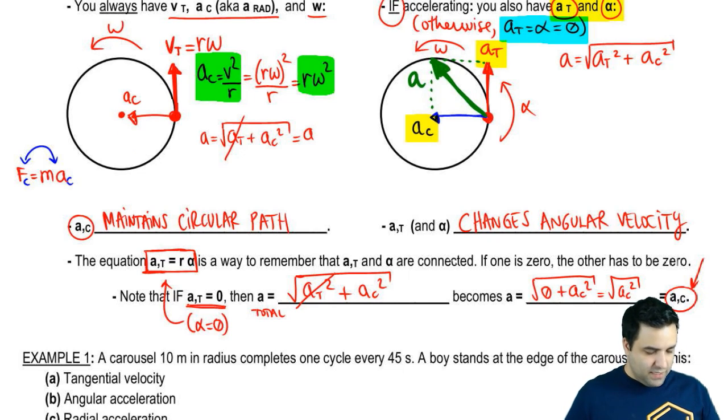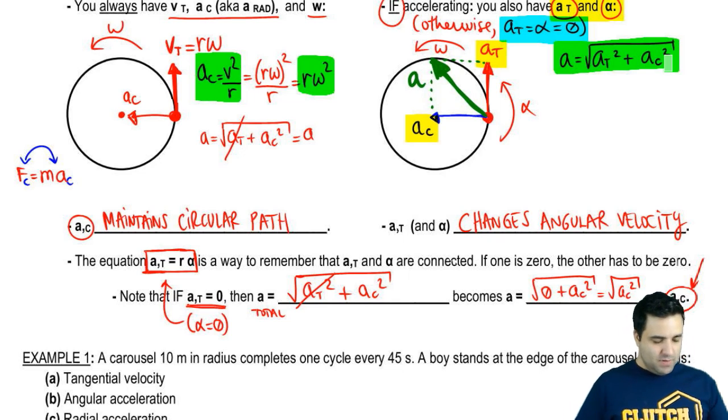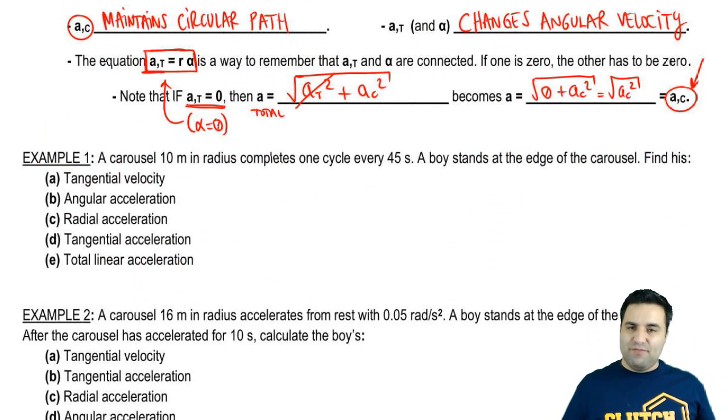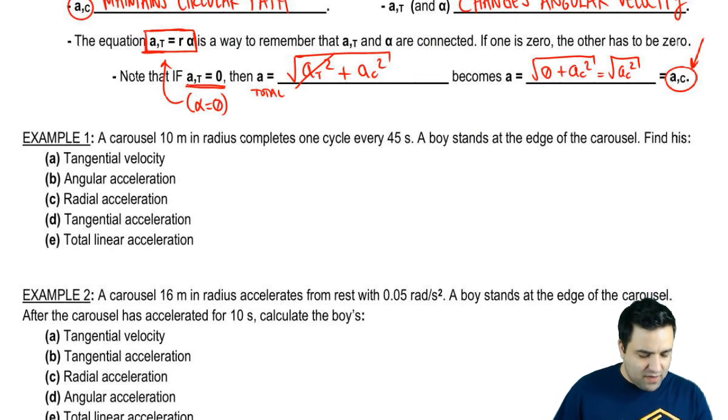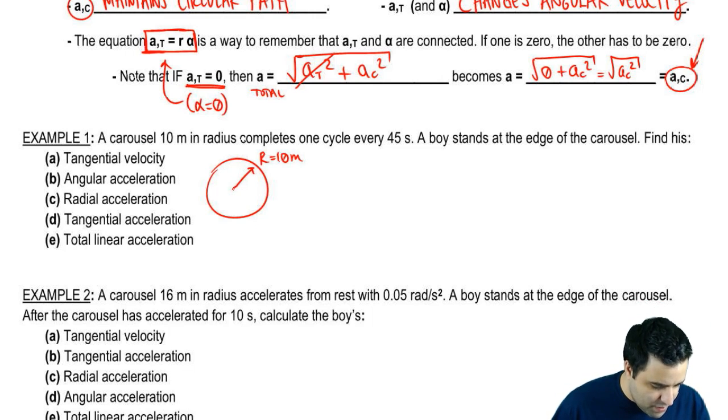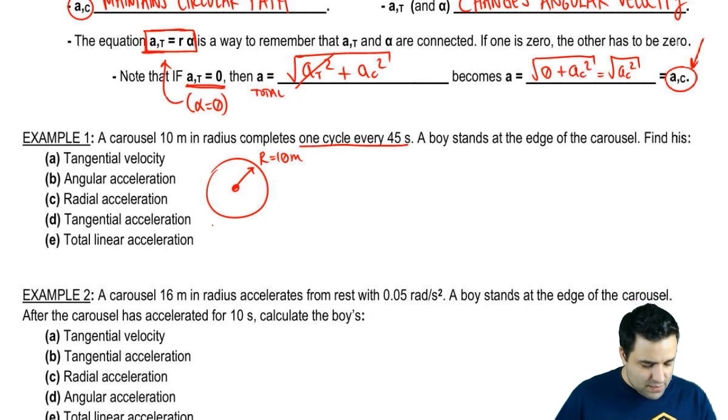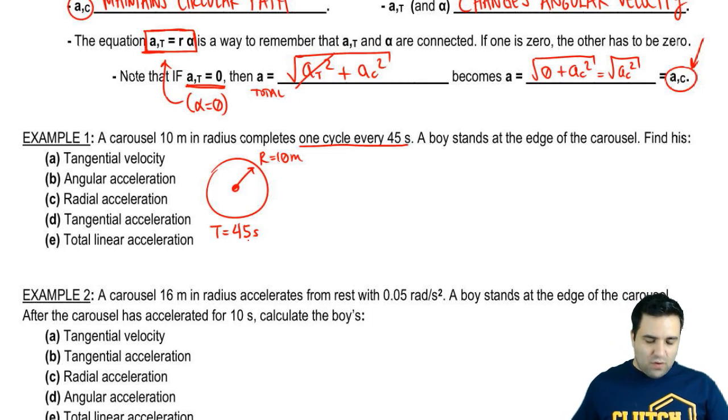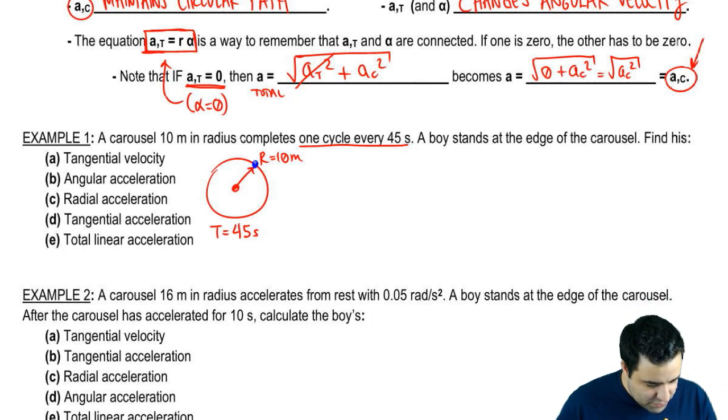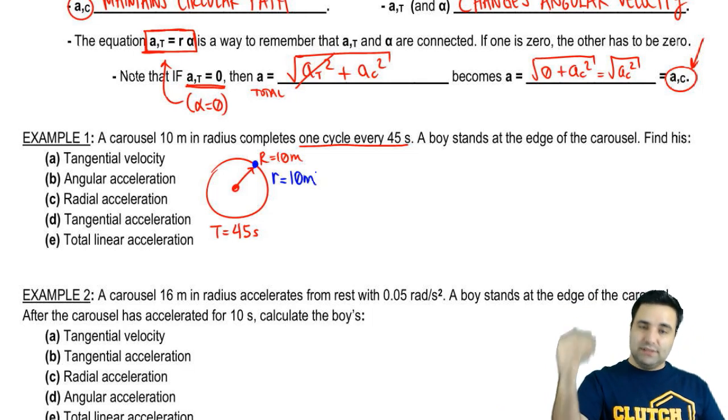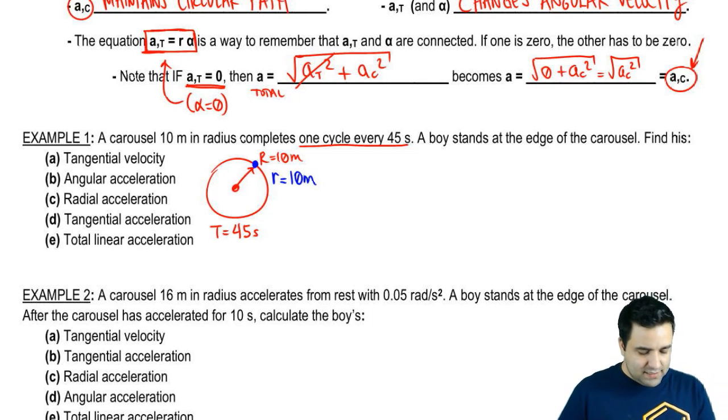All right. Four accelerations. And I gave you two new equations, one new way to rewrite AC and an equation for the total A. So let's do a problem here. It's got five parts. It's kind of annoying, but hopefully you see that it's not that bad. So I have a carousel, carousel 10 meters in radius. So big circle, radius equals 10 meters. Complete one cycle every 45 seconds. So that's the period, T is 45 seconds. I want to know what is the tangential velocity. There's a boy that stands at the edge. So if the boy is at the edge, the boy is at a distance r equals 10. If you are sitting at the edge, you sit at the 10 meter distance from the center. And I want to know his tangential velocity.